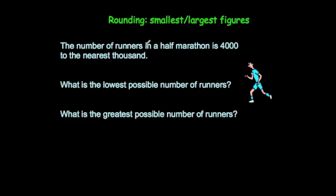The number of runners in a half marathon is 4,000 to the nearest 1,000. What is the lowest possible number of runners in the half marathon? Well, the lowest whole number that would round up to 4,000.